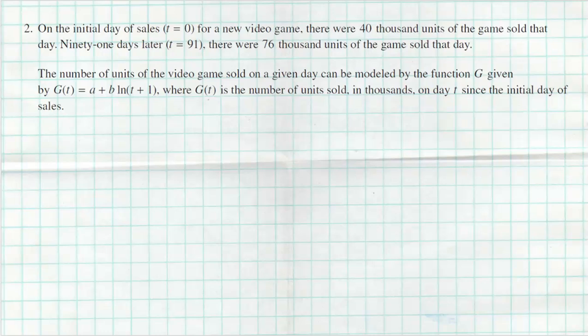Before we dive too far into this problem, let's remind you that this is a natural log model, or a logarithmic model. Logarithmic models increase but they are concave down, so they increase at a decreasing rate of change — increasing, but at a slower and slower rate.